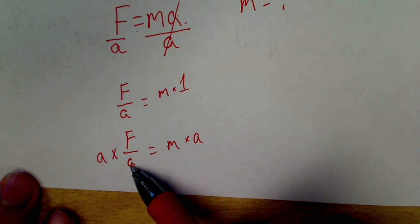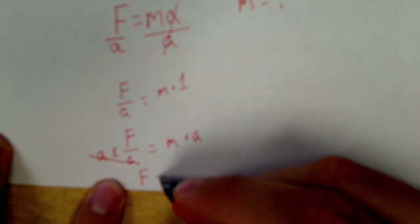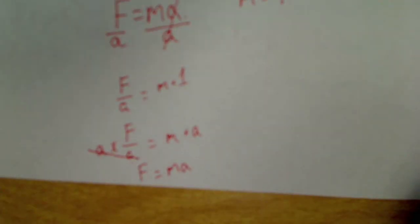This is A times F divided by A. Well, it's A divided by A. A and A cancels. It's gone because A divided by A is 1. So now I rewrite it. F equals MA. That's where we started.